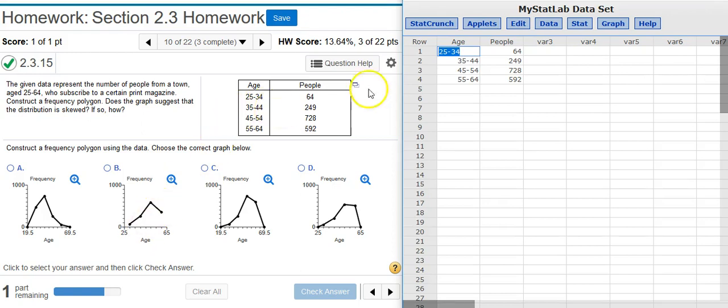So we need to change these age limits a little bit, and we also need to add in a couple of new categories because the frequency polygon, as they want you to construct it, includes not just the data they give you, but also the category before and the category after the data that they give you.